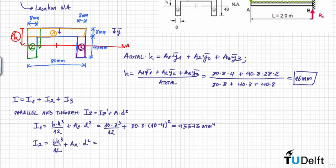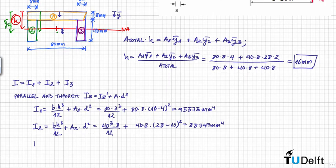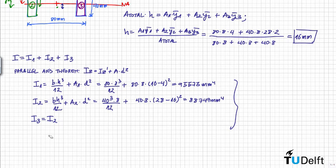The moment of inertia of section 2 is 8×40³/12 plus A2 times the distance from the centroid of section 2 to the overall centroid, squared. Since section 3 is symmetric to section 2, its moment of inertia equals that of section 2. Summing all three gives the total moment of inertia of the whole section.